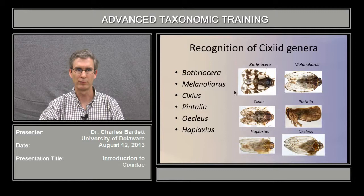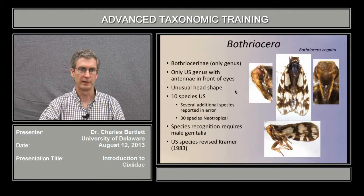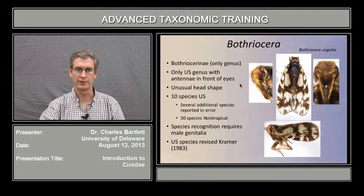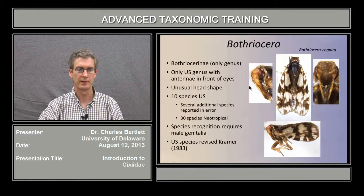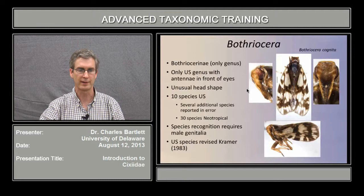The genus Bothriocera is the only genus of Bothriocerae north of Mexico, so it is the only genus with the antennae located in front of the eyes. There is a second genus of Bothriocerae in South America. There are 10 species in the U.S., an additional 30 species that are neotropical, and like other 6-seidaes, species recognition is best based on male genitalia.